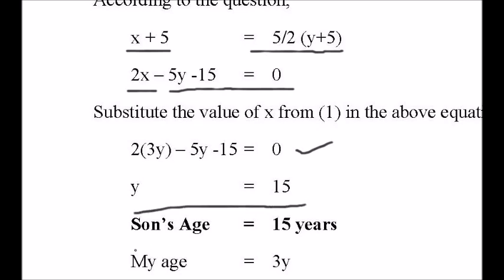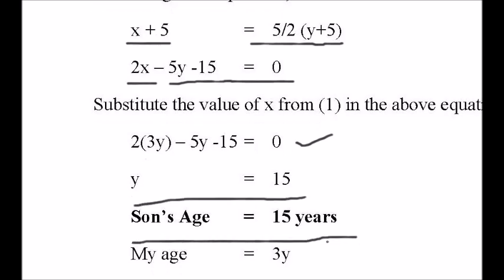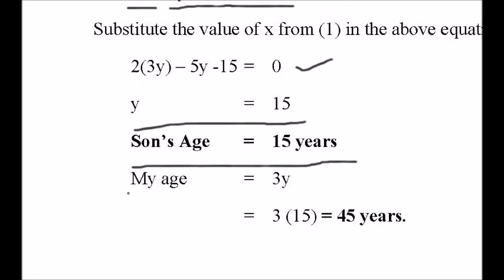So my age is 3Y. Substituting the value of Y here, 3 times 15 equals 45 years. So we have found my age and my son's age.